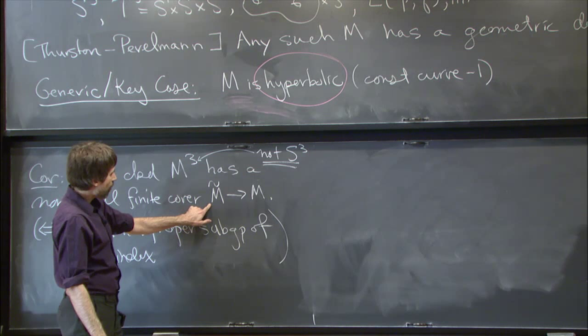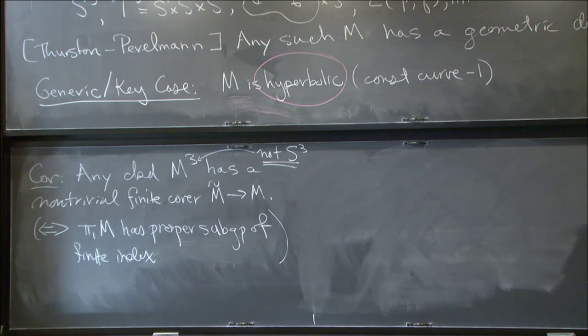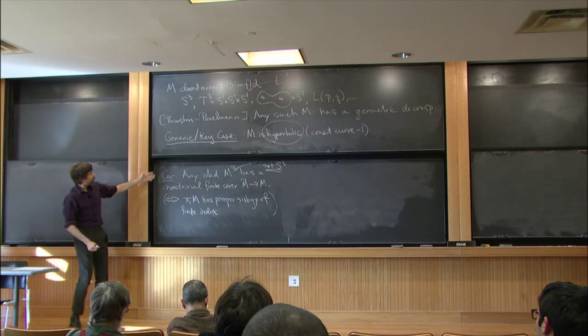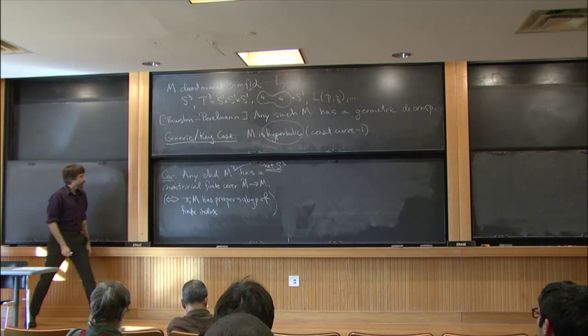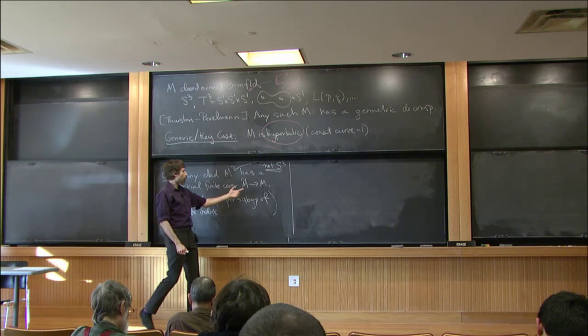This finite cover is just some other closed oriented 3-manifold mapping down to M — a nice local homeomorphism where each point has the same number of pre-images. The existence of this cover is a corollary of geometrization, and in fact the only known way to prove what is a purely topological or algebraic fact actually comes from the geometrization theorem. The rest of my talk will tell you something about what we know about these covers: given some concrete 3-manifold, if you start to unwind its topology by passing to finite covers, what sorts of things can you see?